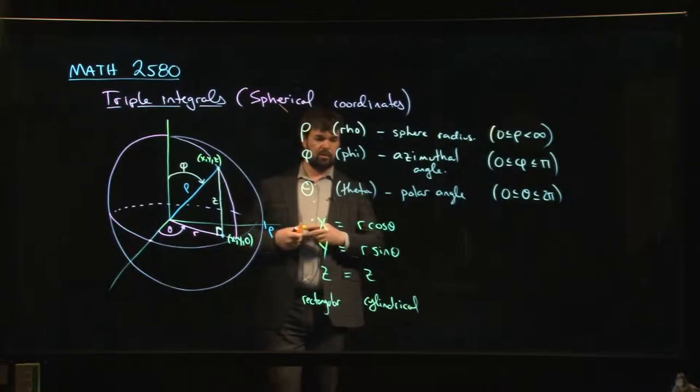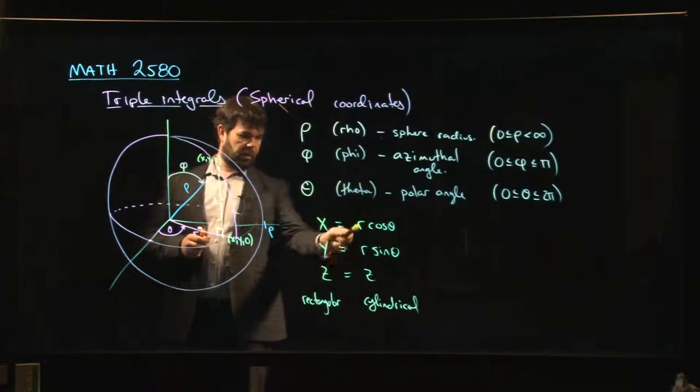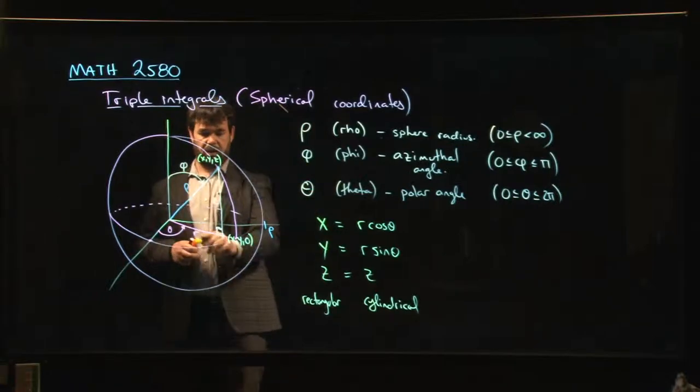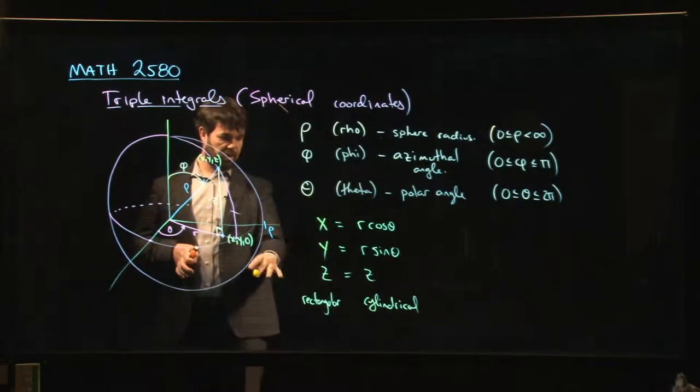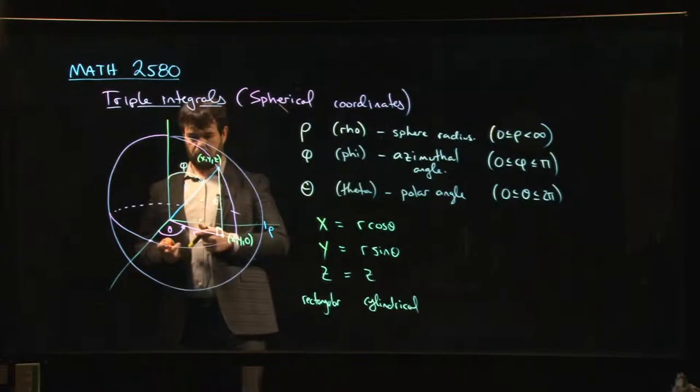Now, how do we get from cylindrical to spherical? Well, in fact, all we have to do is we've got to deal with the r and the z. Theta is the same in both coordinate systems. Theta is shared by the cylindrical and spherical coordinates. It's the same polar angle as always.